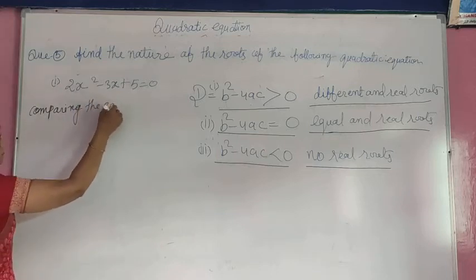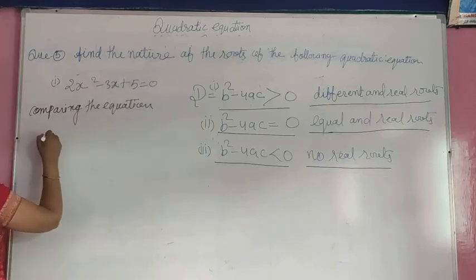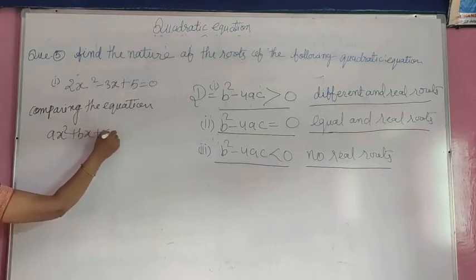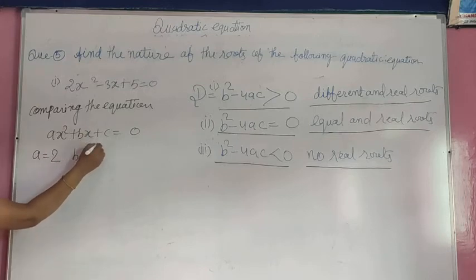Comparing the equation with x² + bx + c = 0. A is equal to 2, B is equal to -3, and C is equal to 5.